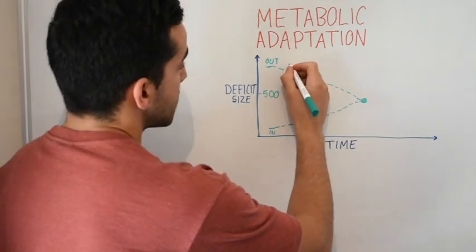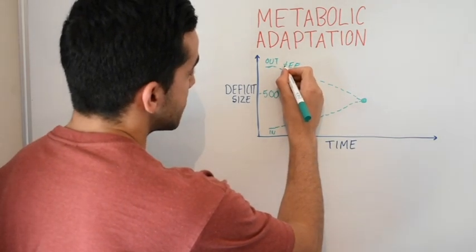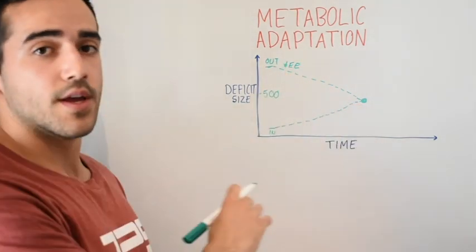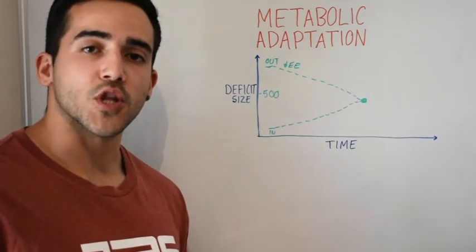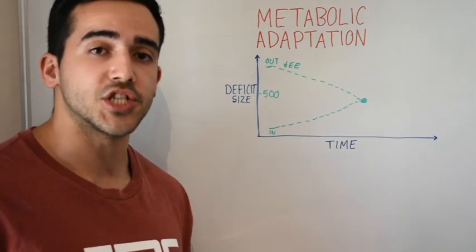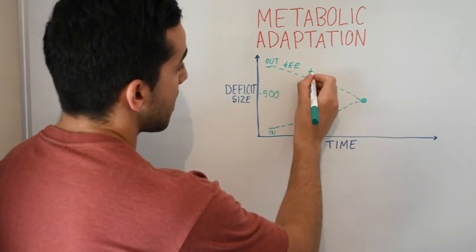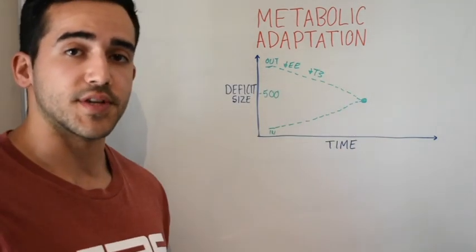So I'll note that down. So we've got energy expenditure, and that decreases, which is why this slope is heading in a downward direction. We've also got hormones like thyroid hormone, which decreases in an energy deficit. And that also has a large impact on your energy expenditure in the day.